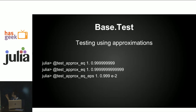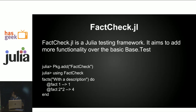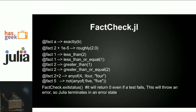Base.Test also provides approximation functions related to floating point numbers. These approximately compare an integer value with a floating point number. FactCheck is an improvement over Base.Test — it gives a lot more flexibility and is even simpler to use. It offers many additional functions, such as comparing exact values or approximate values, and these kinds of functions are not present in Base.Test.